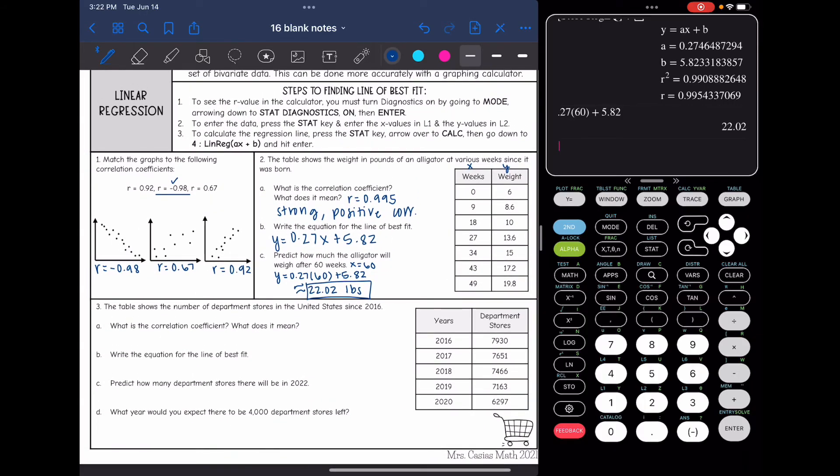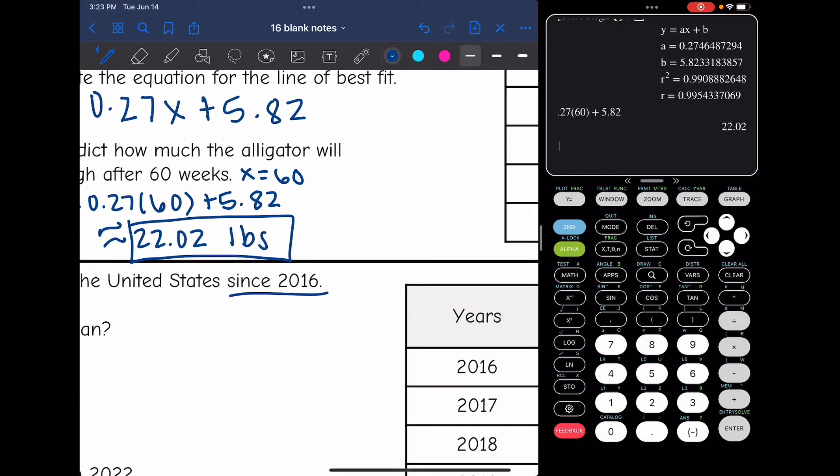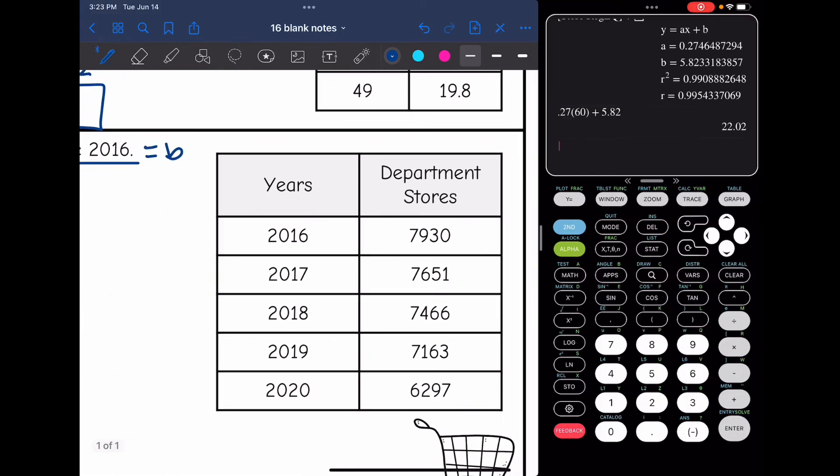Number three says the table shows the number of department stores in the United States since 2016. What is the correlation coefficient? What does it mean? So I need to enter this data into the calculator. Let's look at the table and think about the information they gave us. It says since 2016, that is going to be like our y-intercept initial value. So what I'm going to do in the table is change 2016 to 0 because we are starting at the year 2016. That is like year 0.